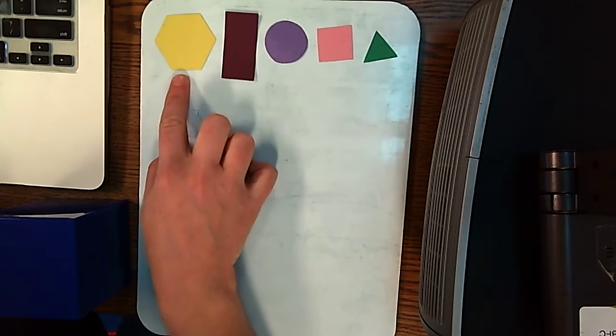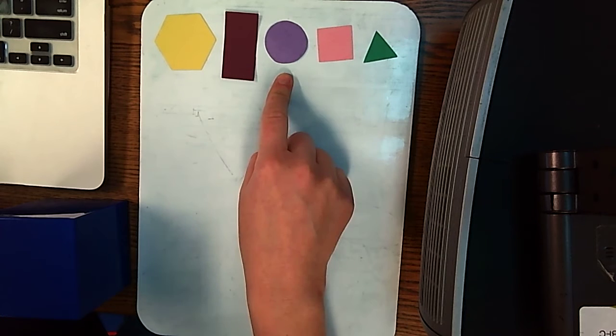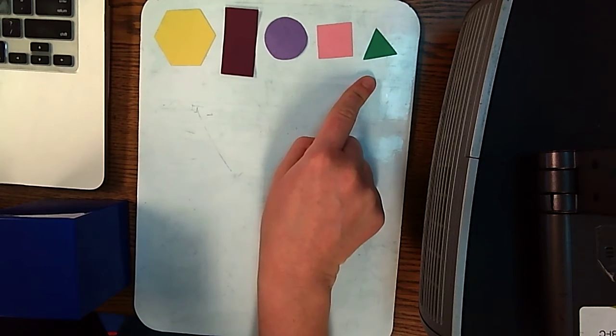We've got our hexagon, rectangle, circle, square, triangle.